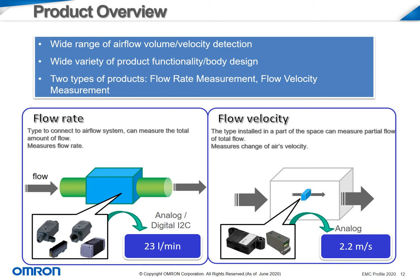On the other side, we have the flow velocity sensors. This product type is installed in open air and can measure the partial or total air flow as it passes over the sensor. These sensors are only available in analog and measure changes in air velocity, outputting raw data in meters per second.